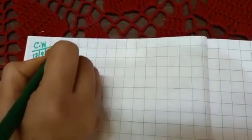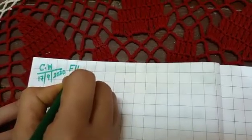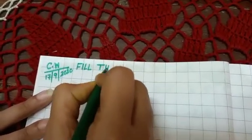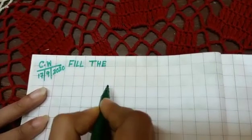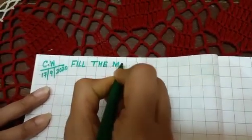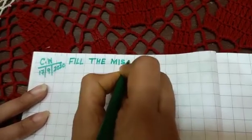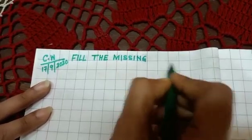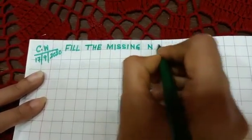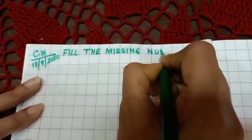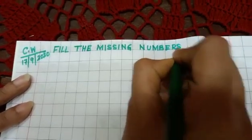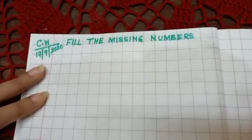Here you will write: Fill — F I L L — the missing — M I S S I N G — numbers — N U M B E R S. Fill the missing numbers.